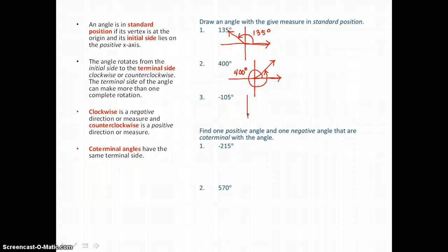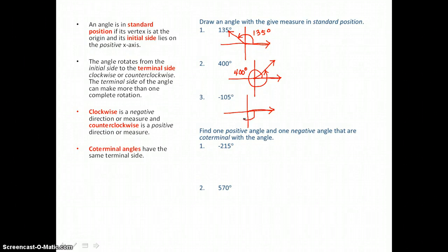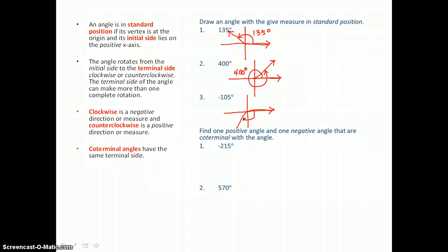Now graphing a negative angle in standard position. We'll start again on the positive x-axis with the initial side, only this time we'll move in the clockwise direction, which is the negative direction, 105 degrees — so 90 degrees and 15 degrees more. Our terminal side ends up in the third quadrant. We label our angles in standard position because we're approximating where that terminal side is, and our label tells exactly how far we've rotated.